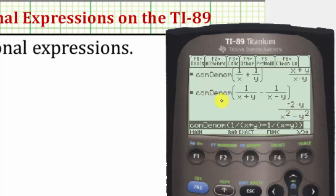When using the common denominator function, the denominator is always going to be multiplied out, so if we want it in factored form, we can come back and do this using the factor function under the algebra menu.